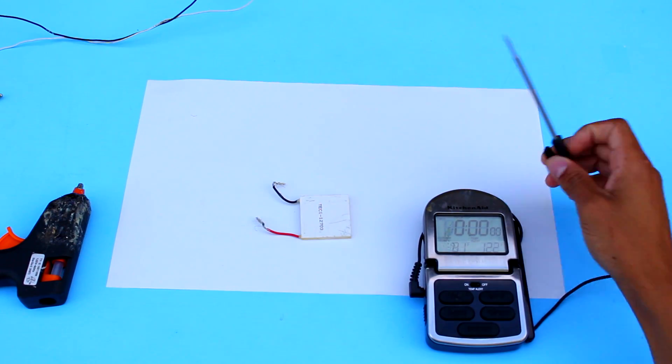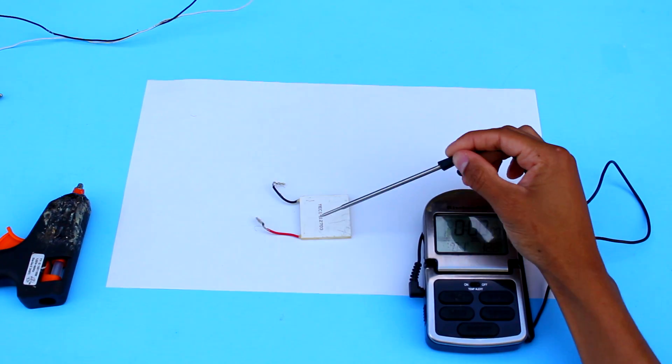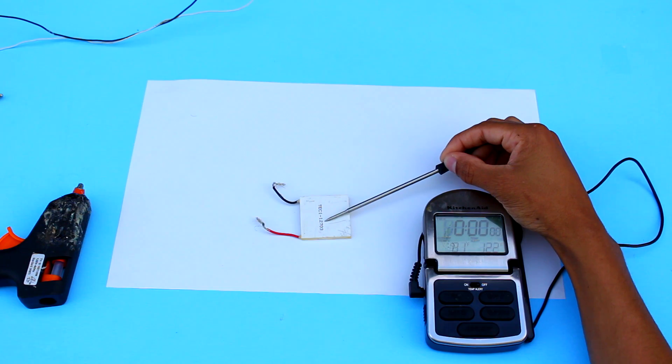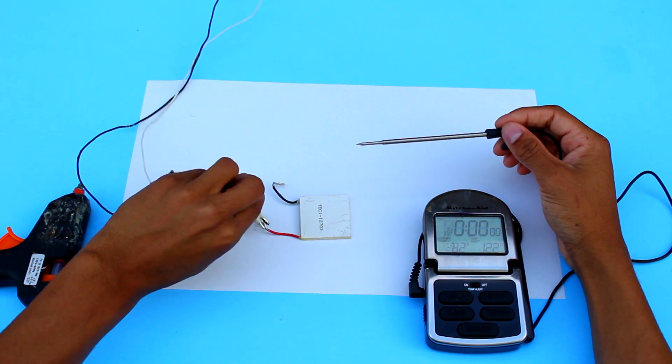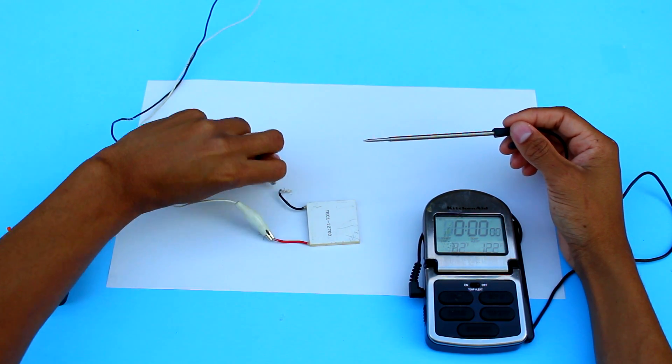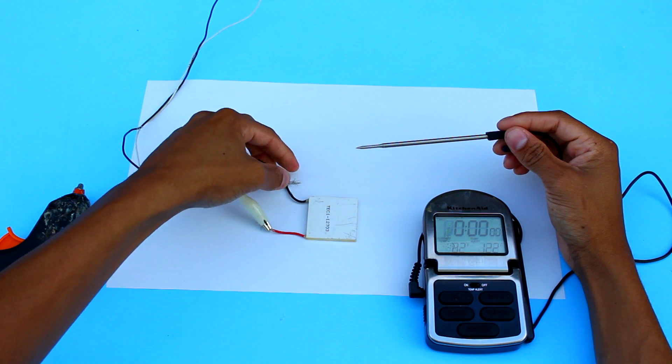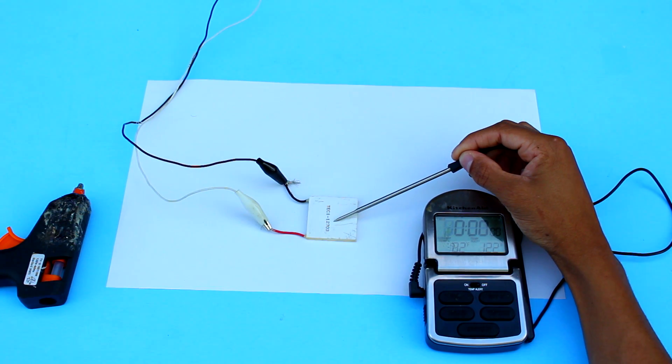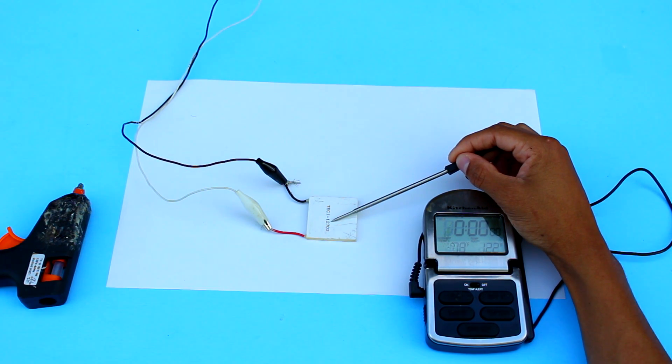Now, before we get into the build, I just want to show some of the science behind what we're going to be using for this air conditioner. These are Peltier elements, and they have the property that when you apply electricity to the terminals, it creates a difference in temperature. That means one side gets hot, and one side gets cold, and in this case, it is the top side that will get cold.